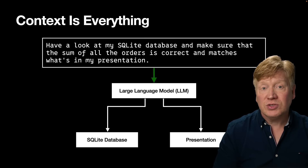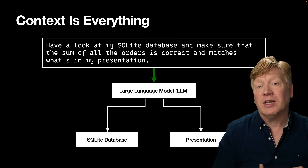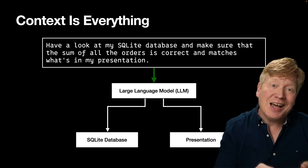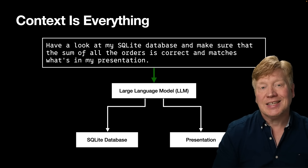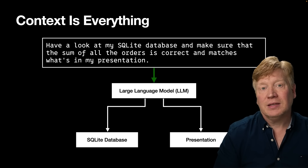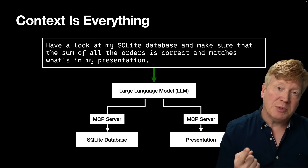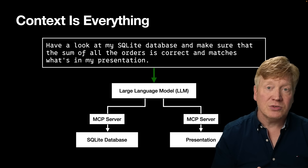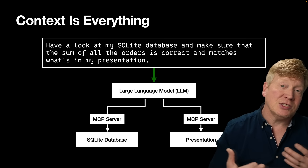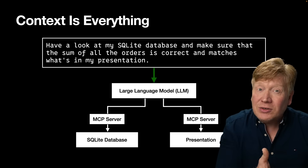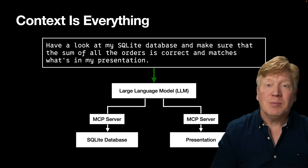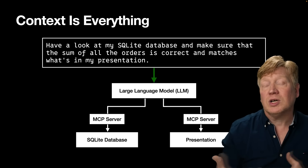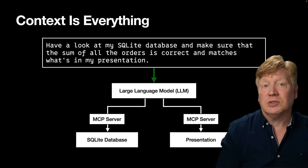MCP servers provide a way for AI models to access the context they need to accomplish tasks. In the case of this query, you probably have one MCP server that can access the database and another that can access your presentation file, maybe from the cloud. The model can use both of those MCP servers to accomplish that single task.